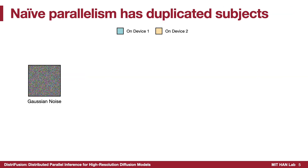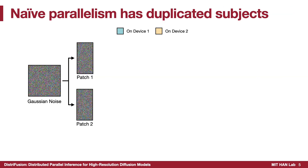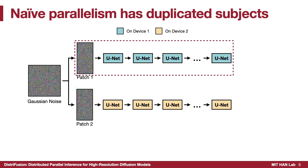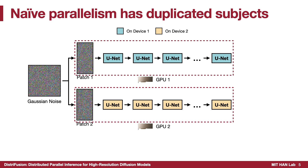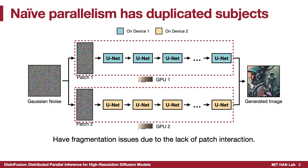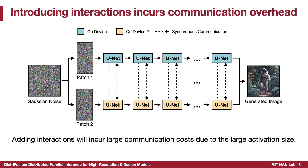A naive approach would be to divide the image into several patches, assigning each to a different device for generation. This method allows for independent and parallel operations across devices. However, it suffers from severe fragmentation issues due to the lack of interactions between patches. Introducing interactions would incur excessive synchronization costs, offsetting the benefits of parallel processing.